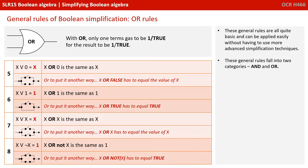And these are the four general OR rules. Remember, with an OR, only one term has to be one or true for the result to be one or true.